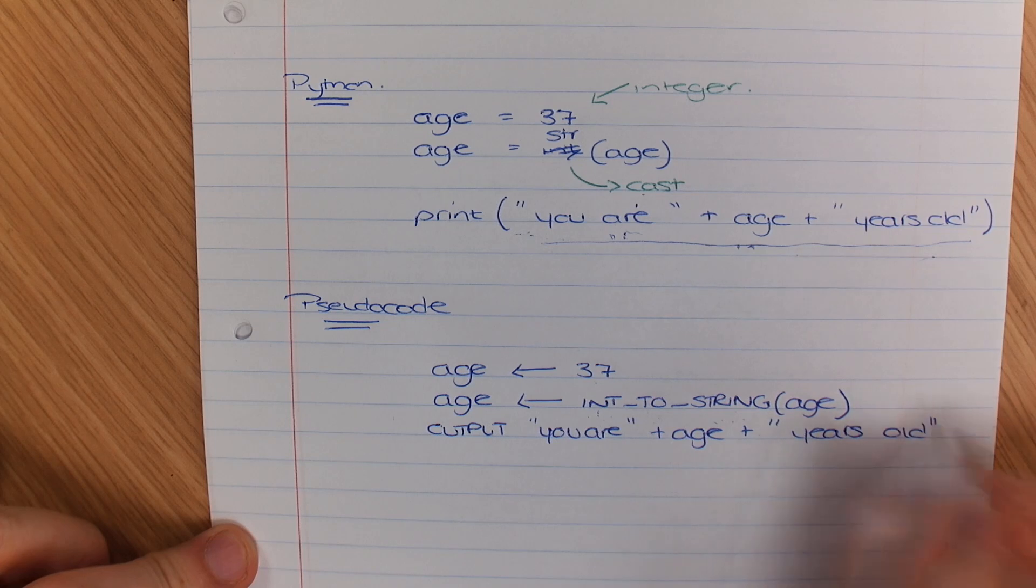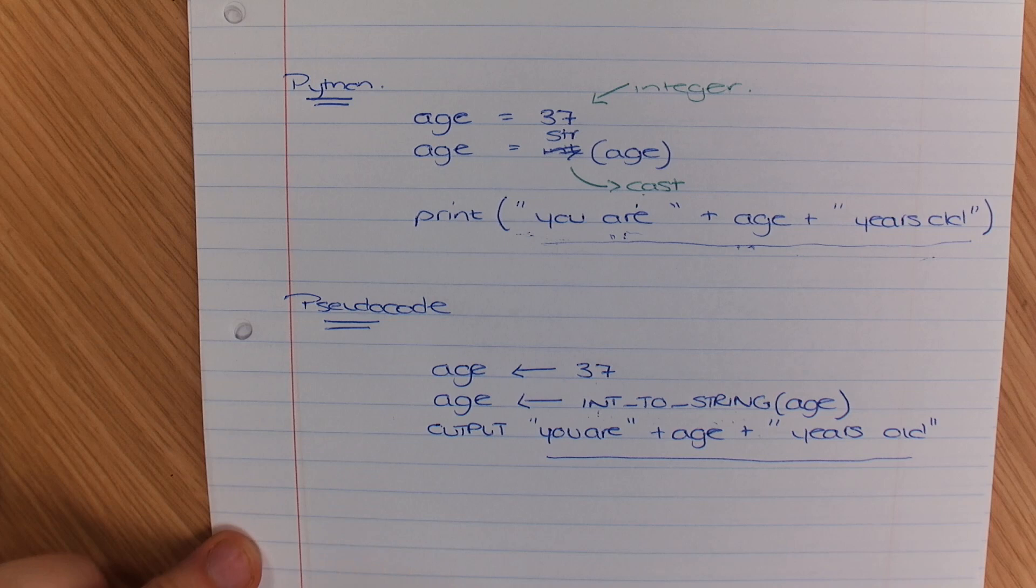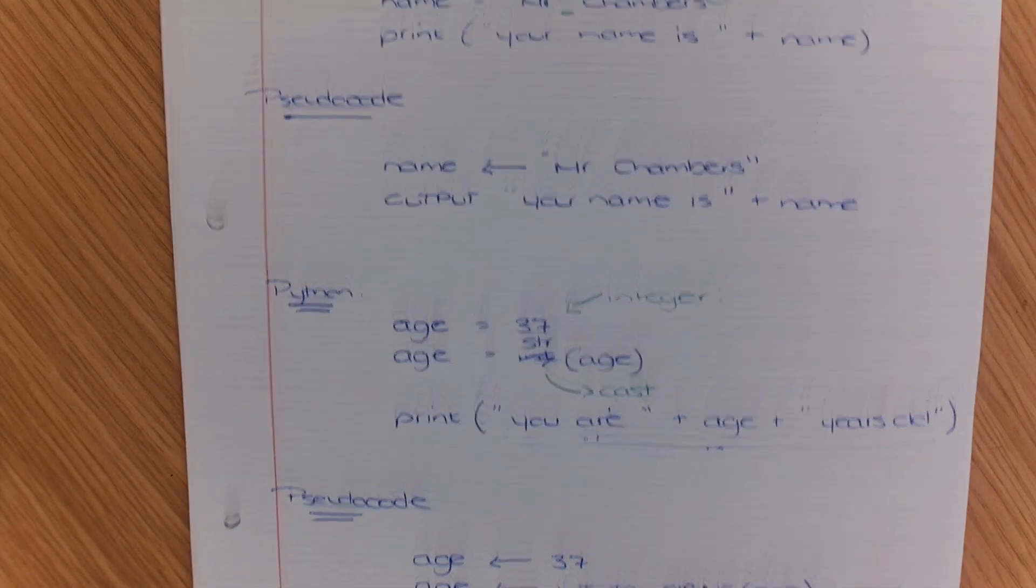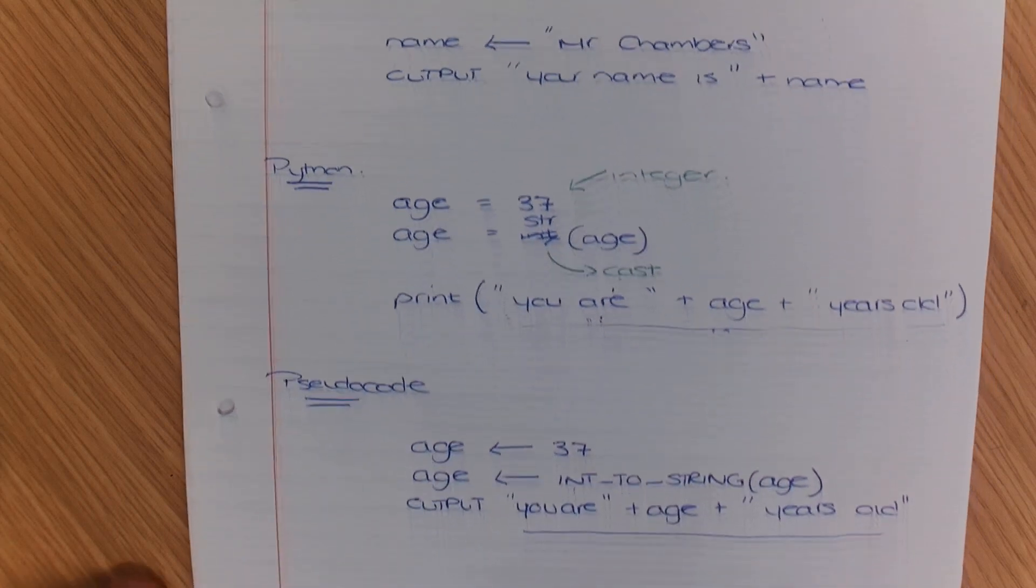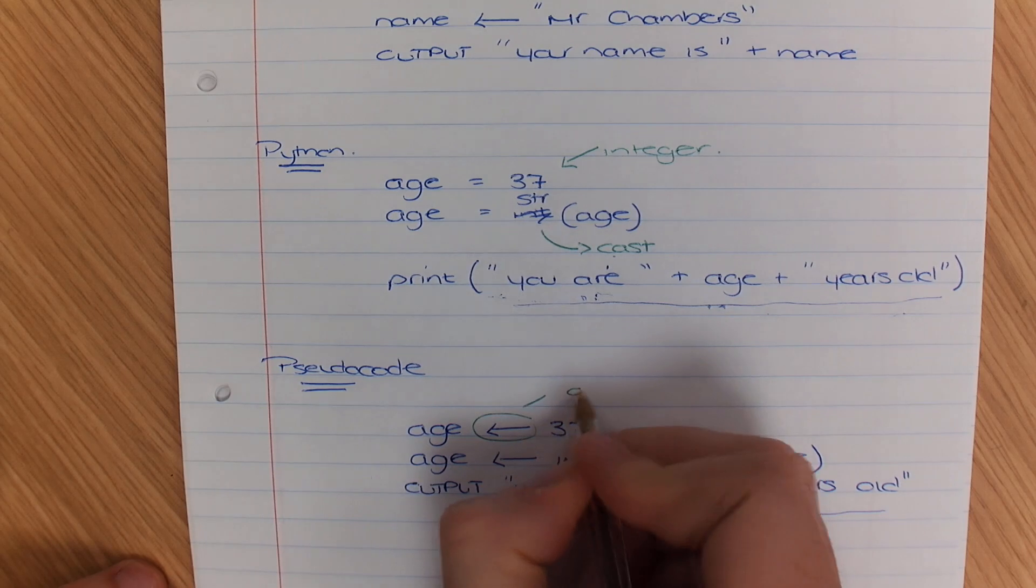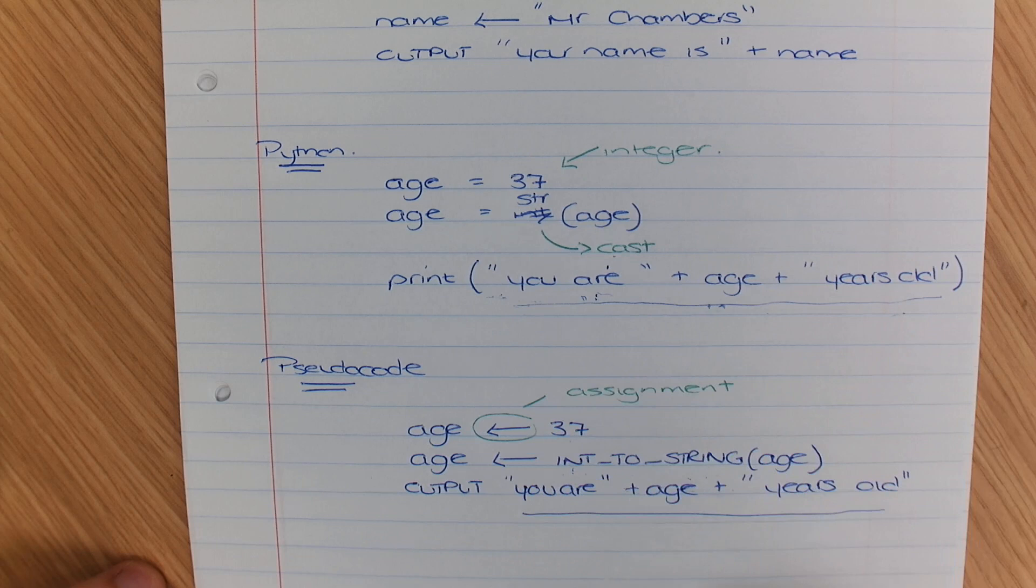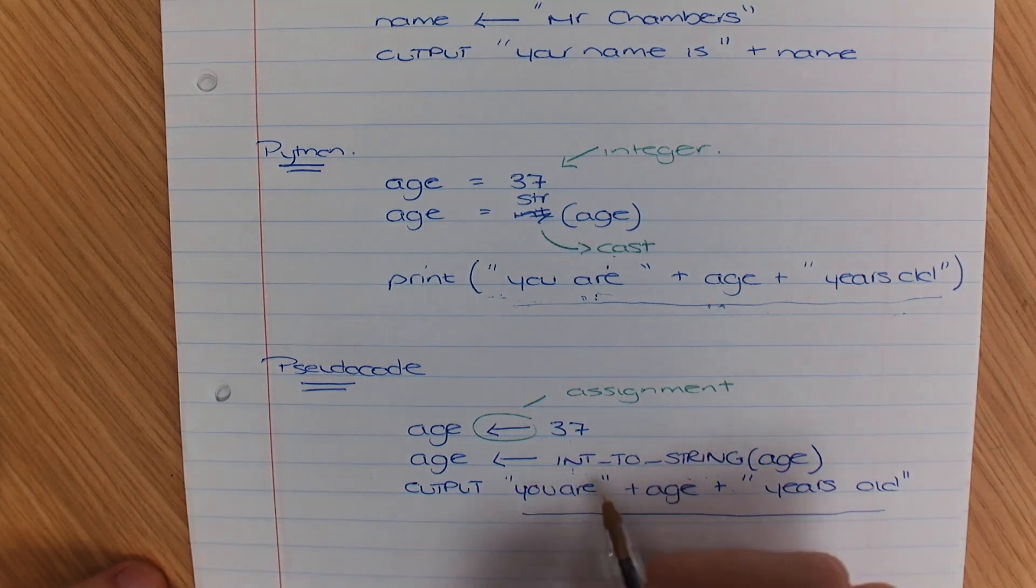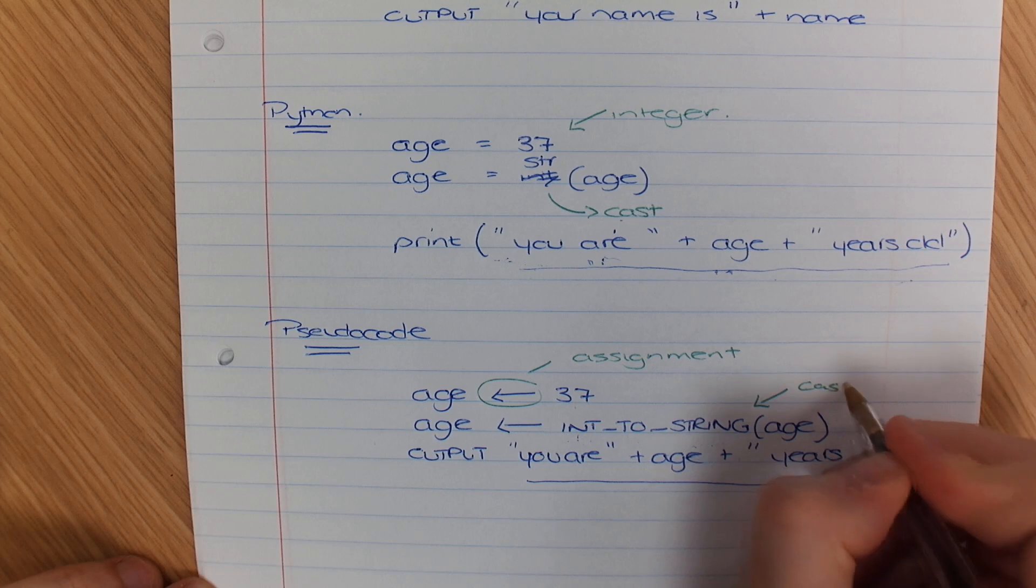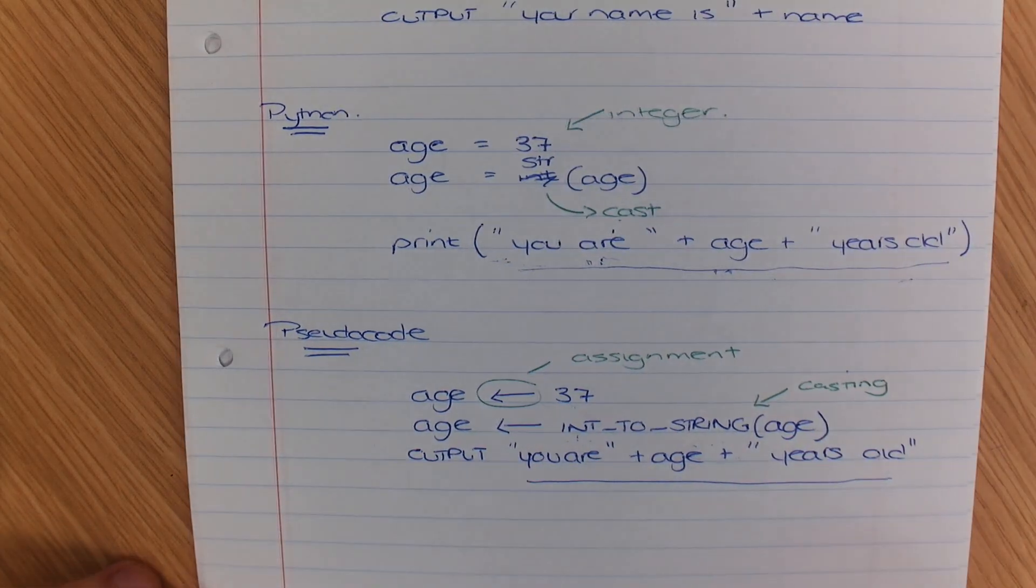And that joins all of that output together. And remember that this symbol means assignment and this example here int to string is for casting. And that's your first video.